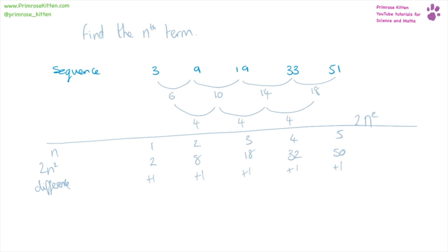So we can say our original sequence is 2n squared, and then we need to add 1.